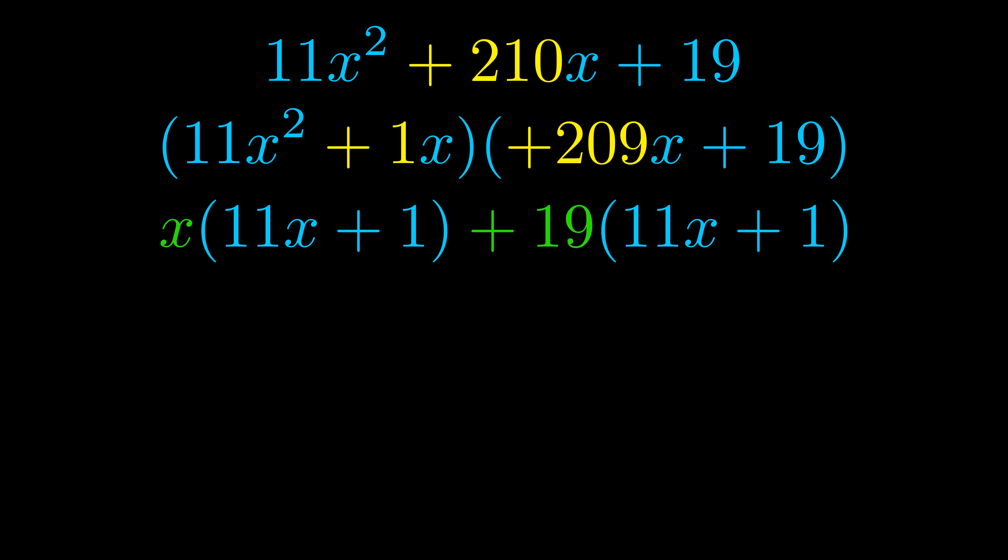Notice also how what remains inside of the parentheses is the same in both cases. The blue values are the same. Those blue values will become one of our factors and we will combine the two green values, the GCFs that we pulled out, to get the other one.